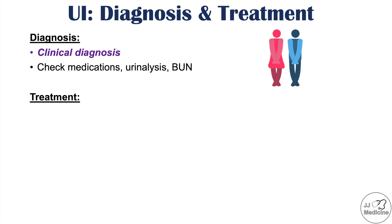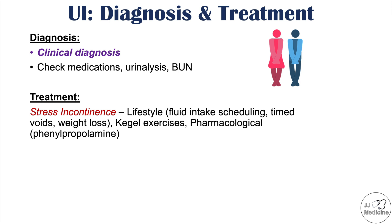The treatment of urinary incontinence depends on the type. For stress incontinence, lifestyle modification is important: fluid intake scheduling, timed voids to ensure the bladder is empty before situations like sneezing or coughing, and weight loss to reduce intra-abdominal pressure. Kegel exercises — pelvic floor exercises — are also used. Pharmacological treatment is available in some situations, with one example being phenylpropylamine.